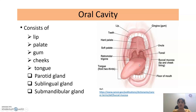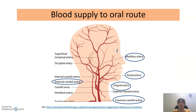The Oral Cavity also consists of three important glands: the parotid gland, sublingual gland, and submandibular gland. These glands continuously secrete saliva in the oral cavity, which keeps it moist. The oral cavity is a highly vascularized area, and blood supply is carried out through various arteries — mainly the maxillary artery, facial artery, and lingual artery.